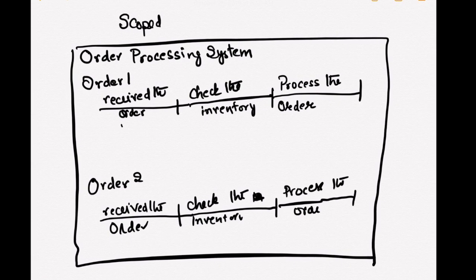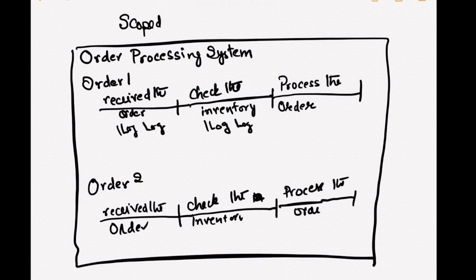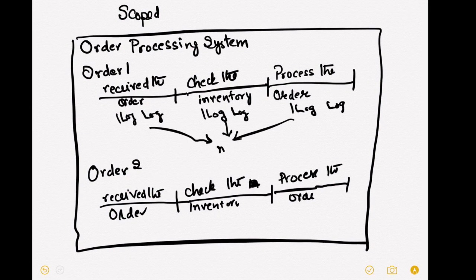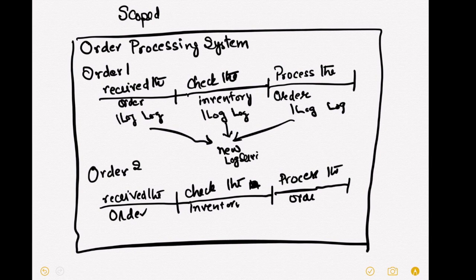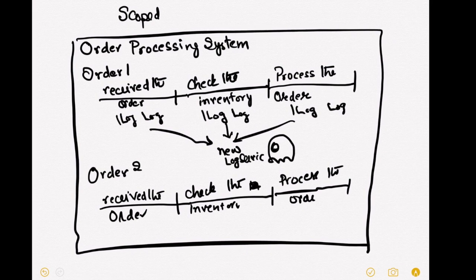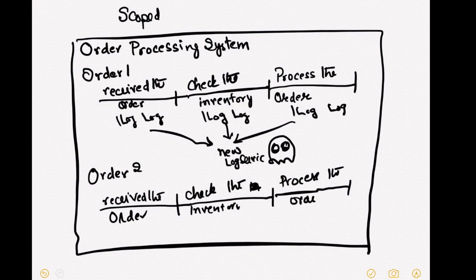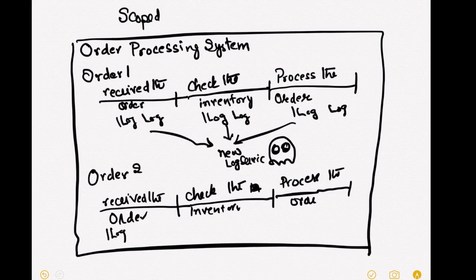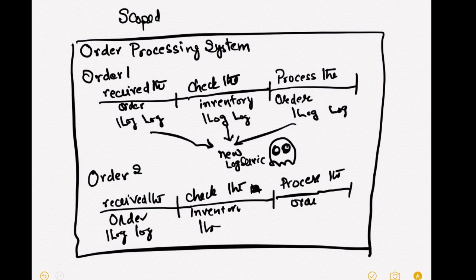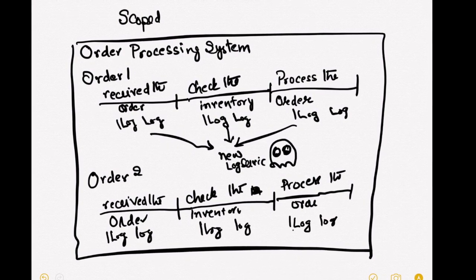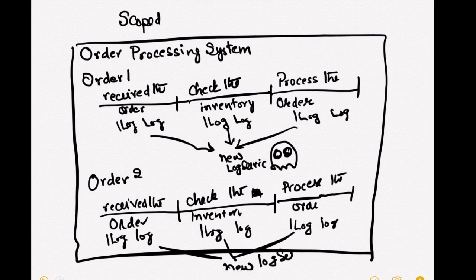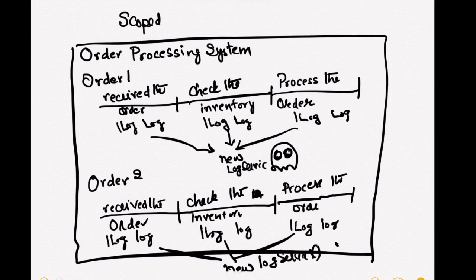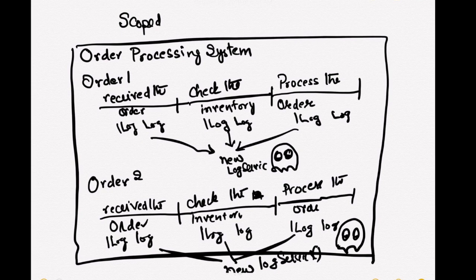So what happens if we're logging each step when it is scoped? Then per request, one instance of the service or object is created per request. So order one has created one service or one object behind the scene, whereas order two has created one object or one service behind the scene. So per request, one object is being created in scoped.